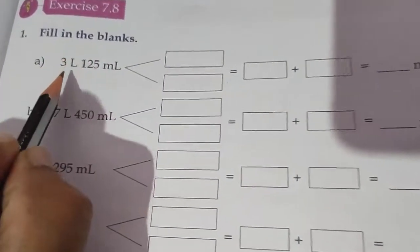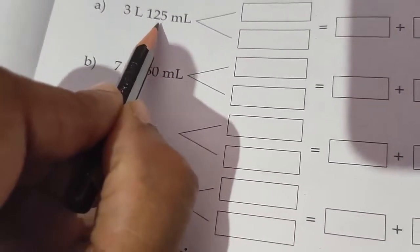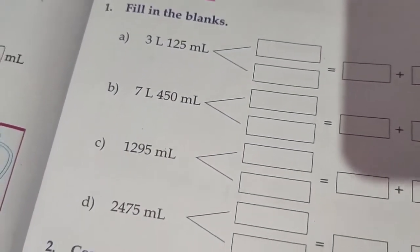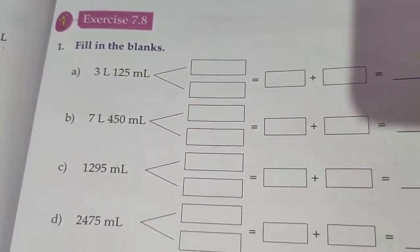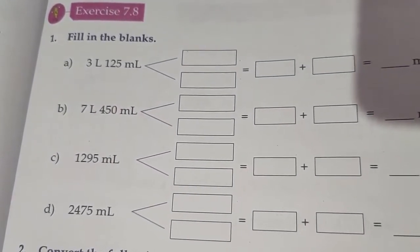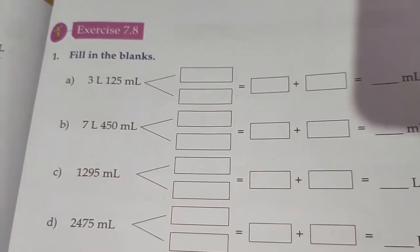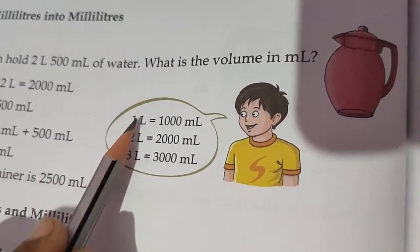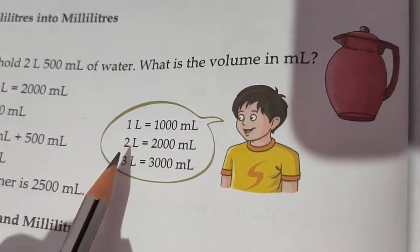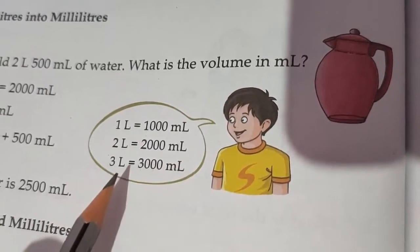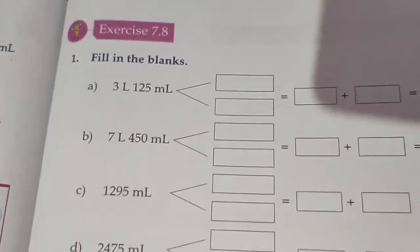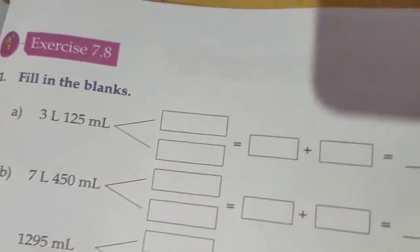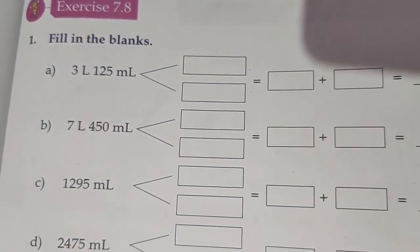First of all, there is 3 liters and 125 ml — ml is the short form for milliliter. So first of all, 3 liters is equal to 3000 ml. You already know this — 1 liter is equal to 1000 ml. So here we have 3 liters, which is equal to 3000 ml.